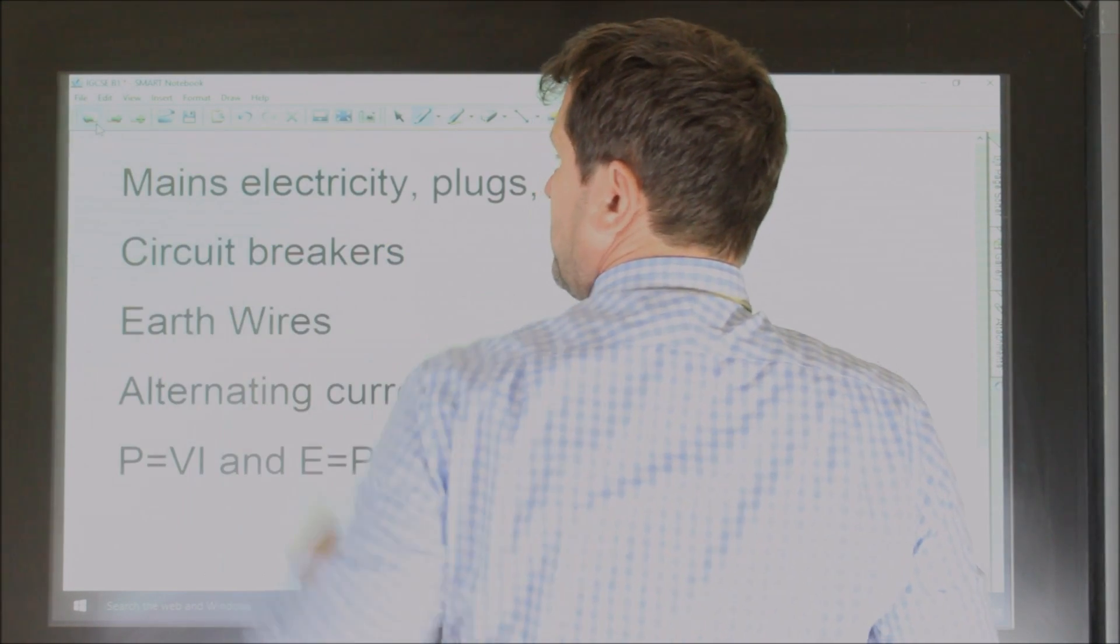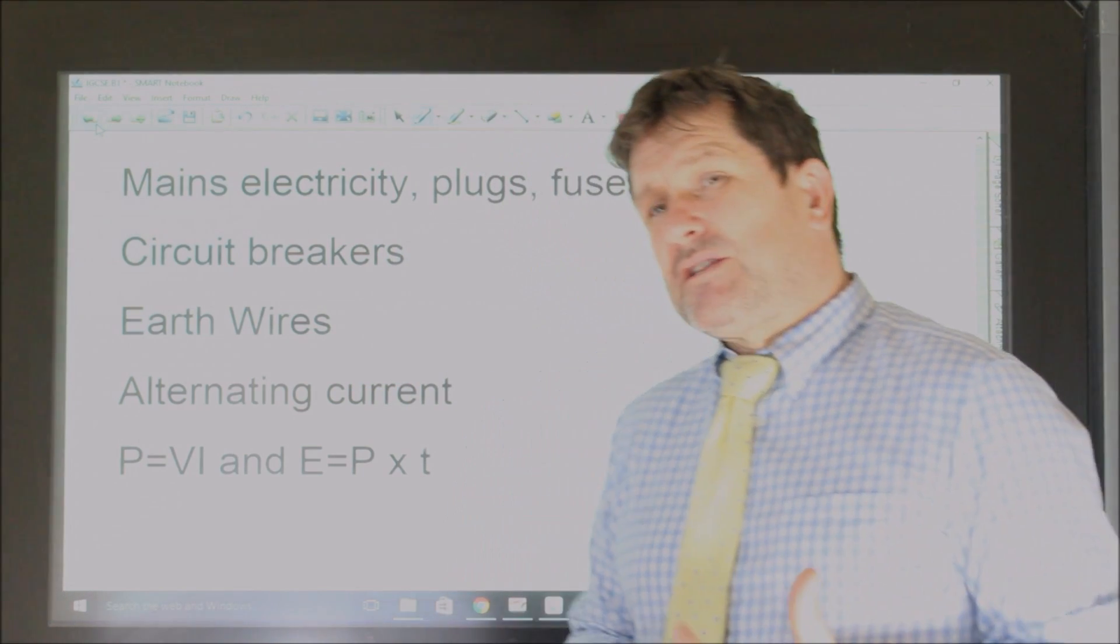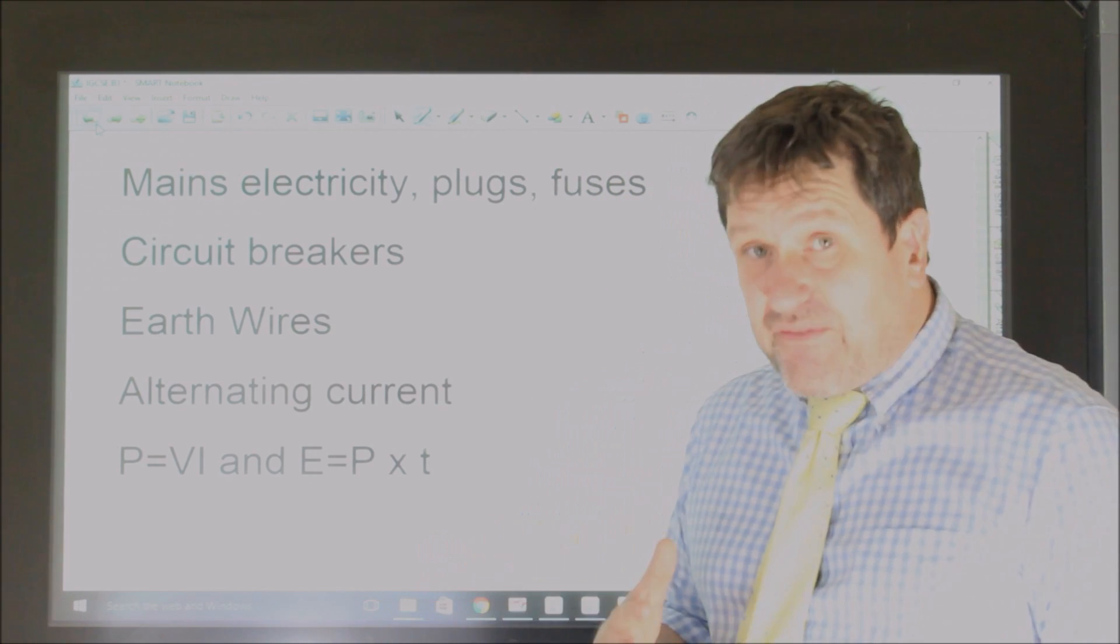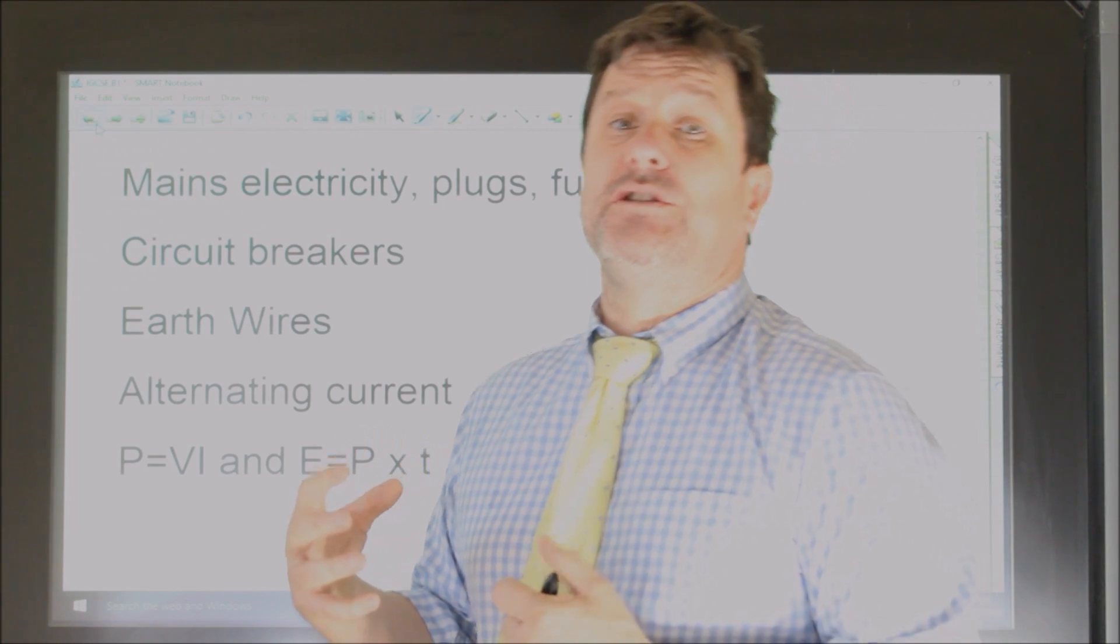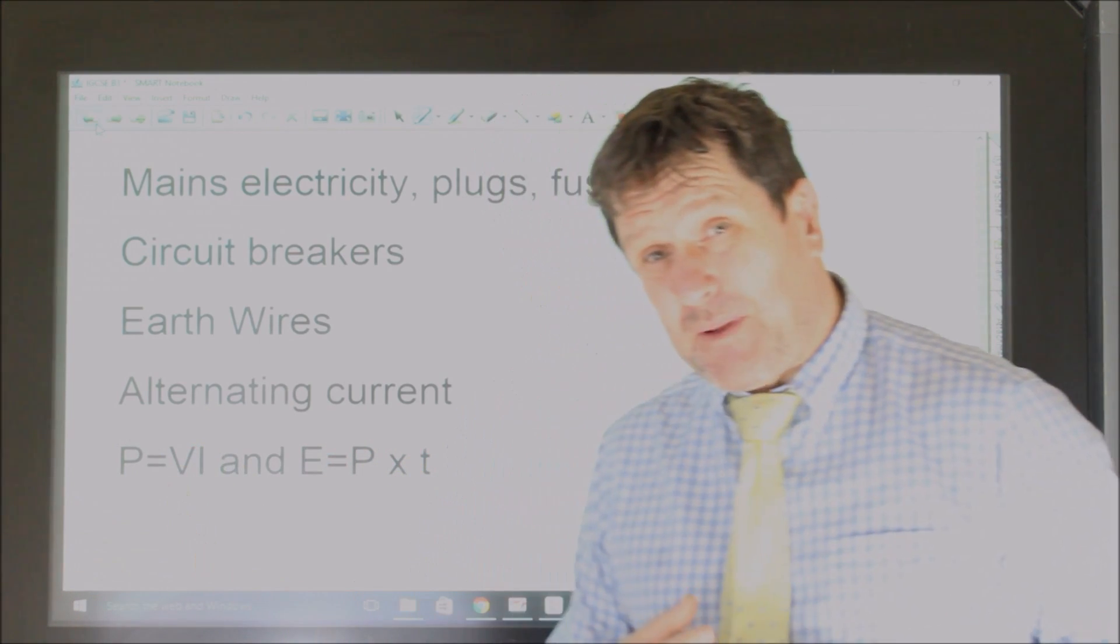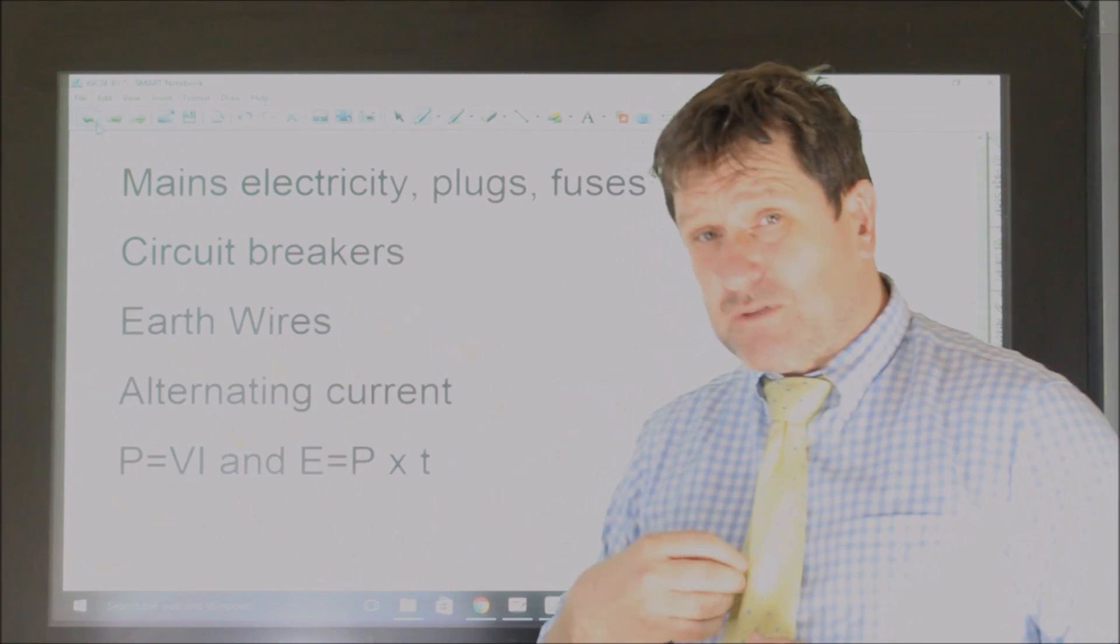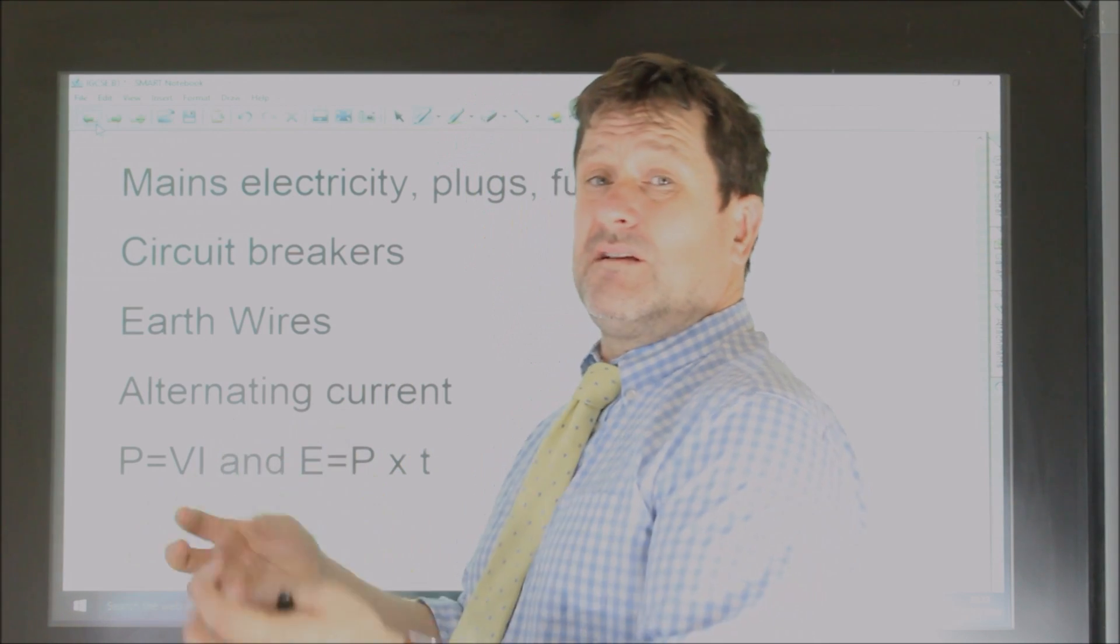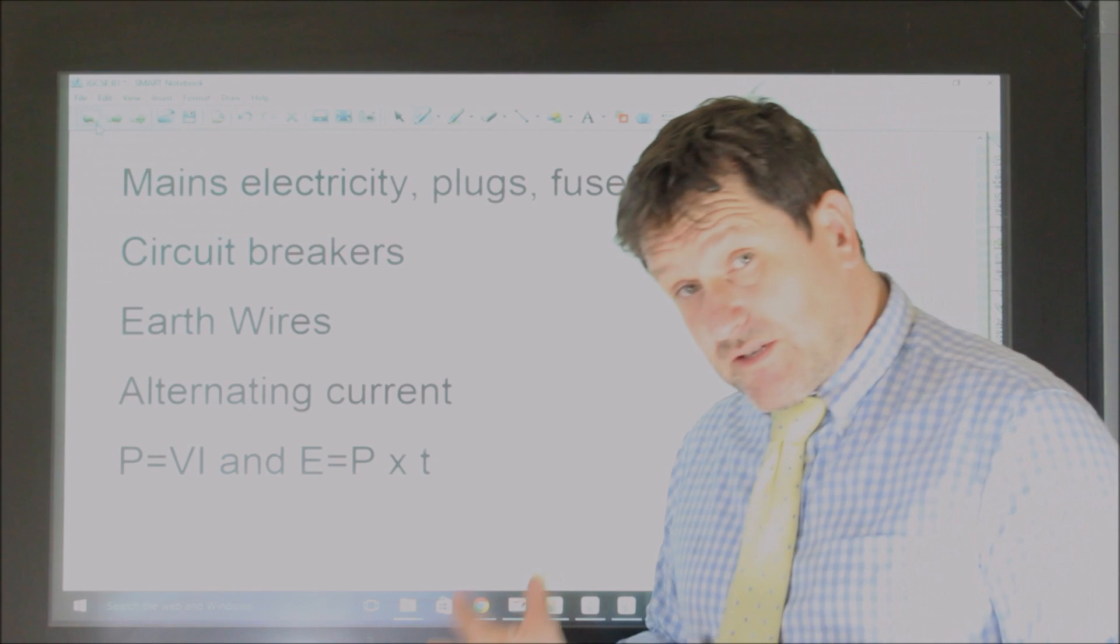Now we also need to start circuit breakers. Circuit breakers, all they do is they automatically turn off the electricity if, for example, more current goes to an appliance than returns from an appliance. So if you've got 10 amps going to a lawnmower and only 8 amps comes back, a circuit breaker identifies that some current has been lost, and that might have been lost by electrocuting someone, and therefore it will automatically turn off the circuit straight away.